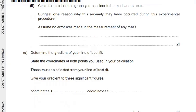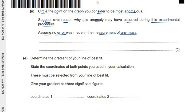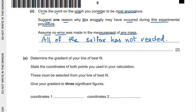The question asks us to circle the most anomalous point on the graph — that has been done — and suggest one reason why this anomaly may have occurred, assuming no error was made in measuring any mass. The reason is that all of the sulfur has not reacted and has been left over in the crucible. One mark is for circling the anomalous point and one mark is for giving the reason.